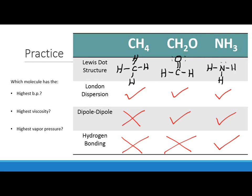Answering the questions: which has the highest boiling point? Ammonia (NH₃) has hydrogen bonding — the strongest attractive force — so it has the highest boiling point and melting point. Highest viscosity? Again, hydrogen bonding trumps everything, so ammonia wins. It also has the highest surface tension. Highest vapor pressure? This is the opposite trend — we want the weakest attractive forces. CH₄ only has London dispersion forces, while the others have dipole-dipole and/or hydrogen bonding. So CH₄ has the highest vapor pressure but the lowest boiling point, viscosity, melting point, and surface tension.